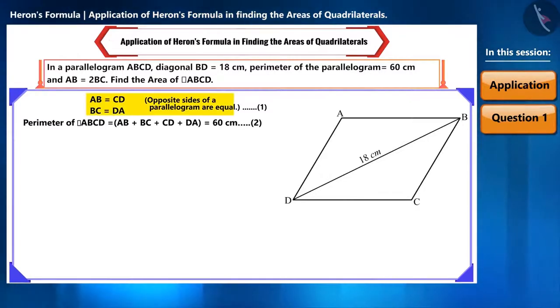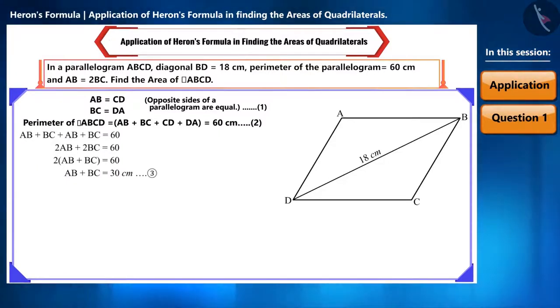Using equation 1, we can write equation 2 as follows. We will get AB plus BC equal to 30.